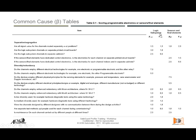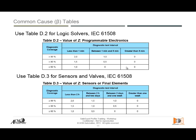Here is an example from Table D1, showing the scoring for programmable electronics, sensors, and final elements. You have logic subsystems with X and Y columns for logic solvers, and X and Y for sensors and final elements. All the factors we discussed — separation, segregation, diversity and redundancy — are included. You answer those questions and give weight to each. This is the engineering evaluation part: answering all questions with respect to factors that affect common causes, including diversity, redundancy, separation, and segregation.